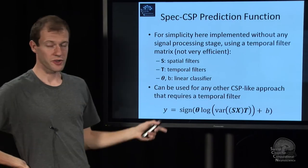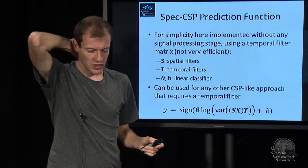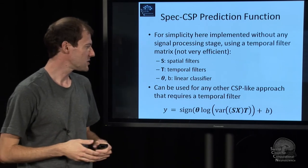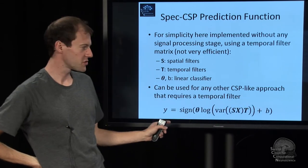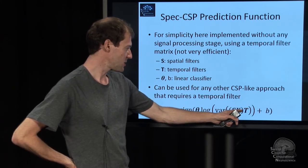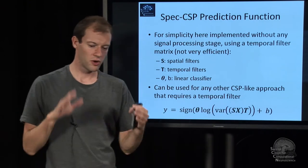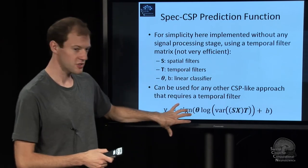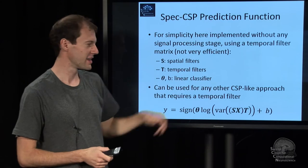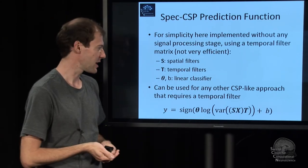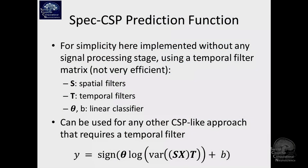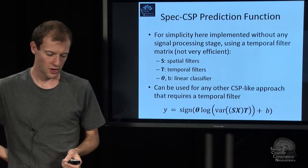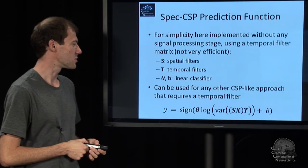With learned frequency weights, you get a somewhat more complex prediction function — it looks like the standard one, except there's an additional matrix T, which is a temporal linear transform. It's applied on the time side, while the spatial filter is on the channel side. This allows you to implement FIR filters, or an FFT weighting and IFFT. It's a very general functional form that allows you to cover just about any stationary oscillatory process quite well. There are different methods to optimize T, and spectrally weighted CSP is one of them.